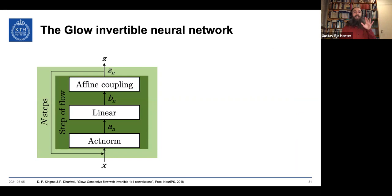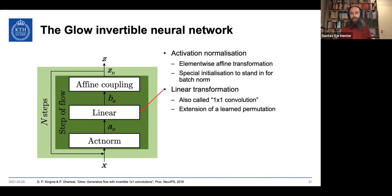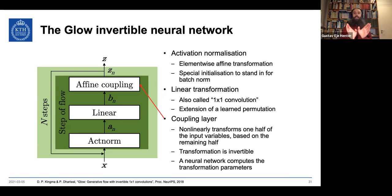The GLOW network has a number of flow steps, each with three sub-steps: activation normalization (element-wise affine transformation initialized in a special way), a linear transformation like a 1x1 convolution that permutes and mixes things, and crucially, the affine coupling layer. The coupling layer non-linearly transforms half the variables based on the other half, using a neural network — so it can be very powerful and strongly non-linear.